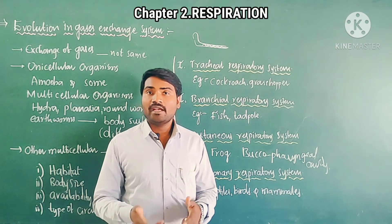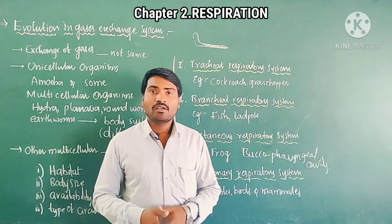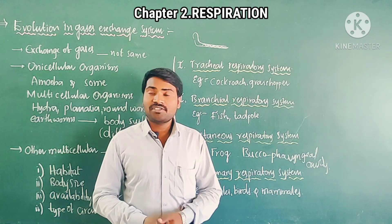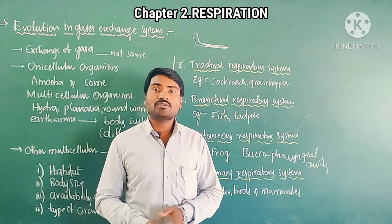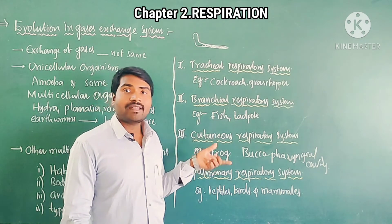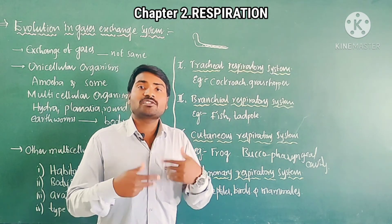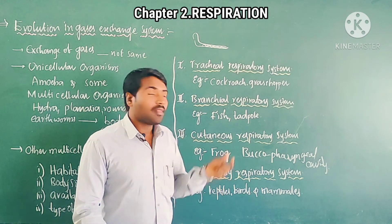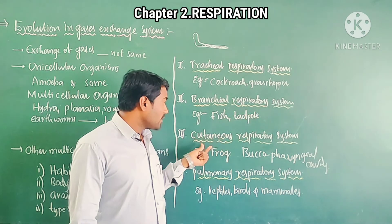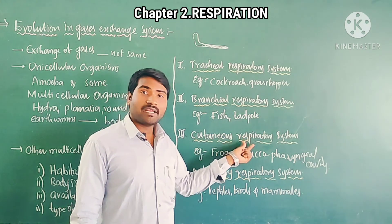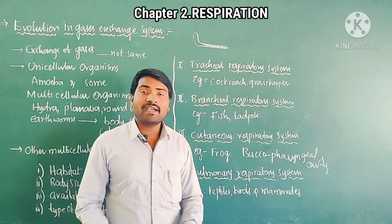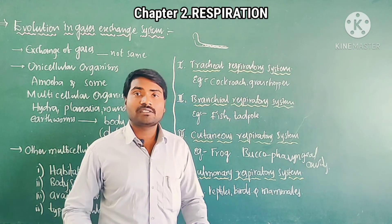For examination, the question may be: how does evolution occur in the gas exchange system? The tracheal respiratory system occurs through the trachea. The branchial respiratory system occurs through gills. The cutaneous respiratory system occurs through the skin. The pulmonary respiratory system occurs through the lungs.